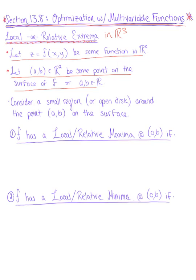When you're considering this point, you want to consider a small region or an open disk around that point (a,b) on the surface, just like we do in R² when we think about a small region around x.